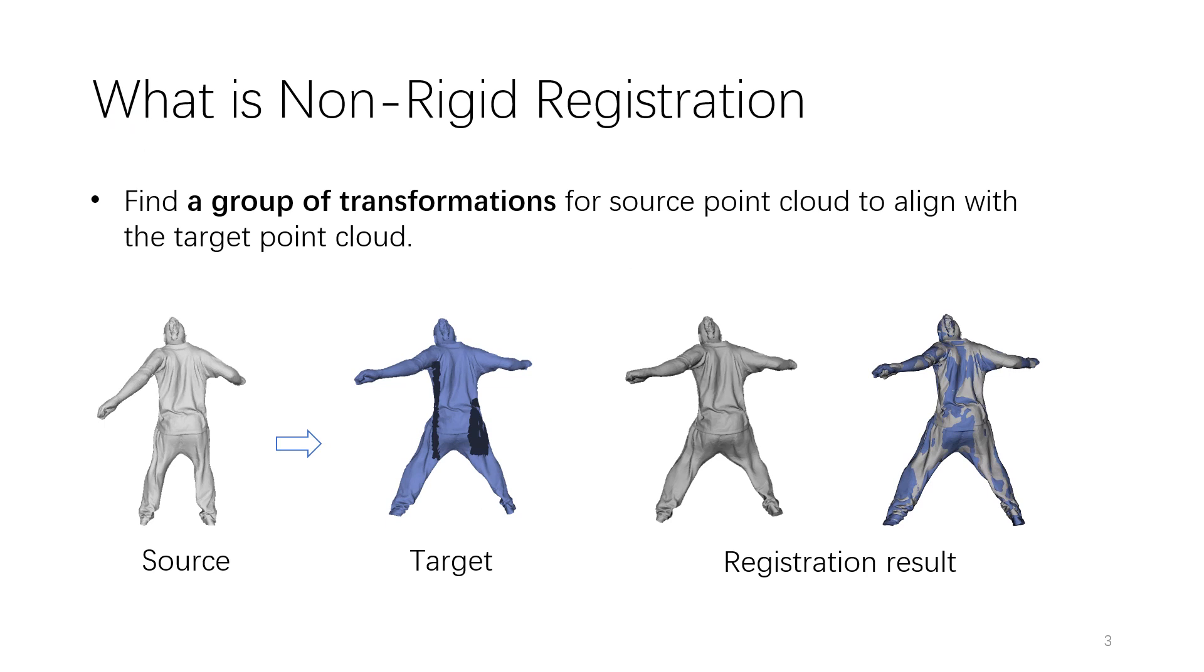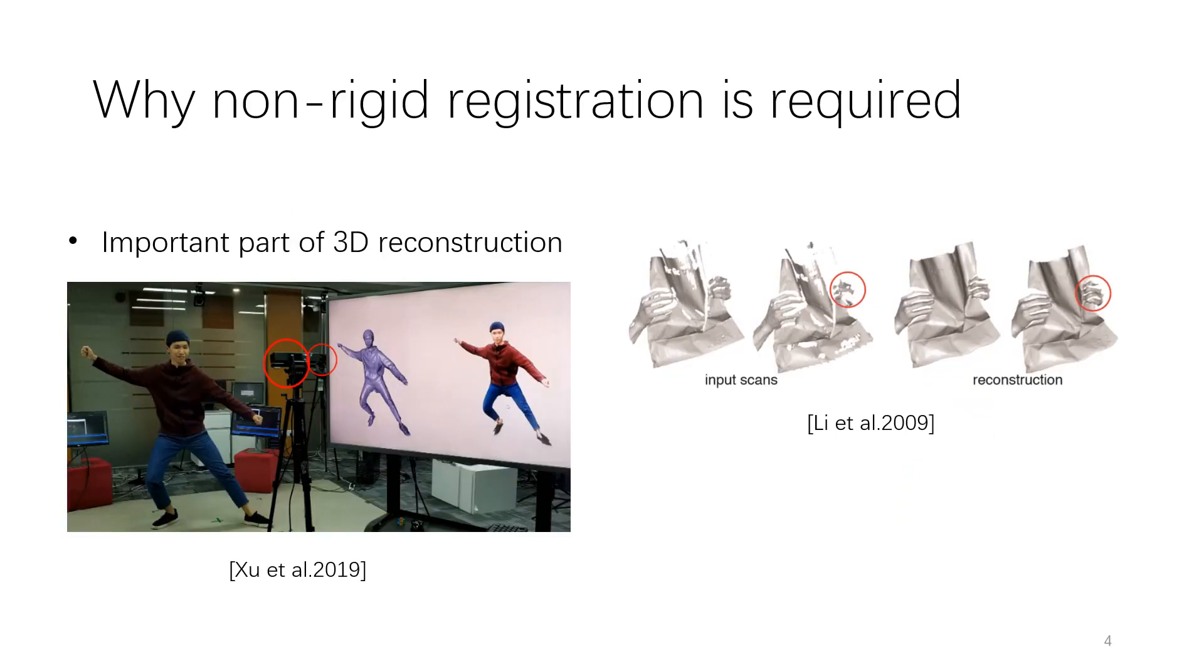What is non-rigid registration? Given two point clouds sampled from a source surface and a target surface respectively, it is to find a group of transformations for the source to align with the target.